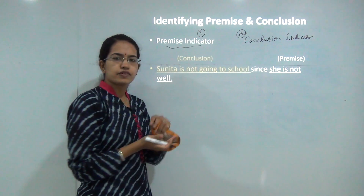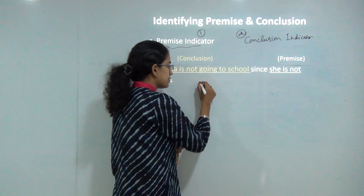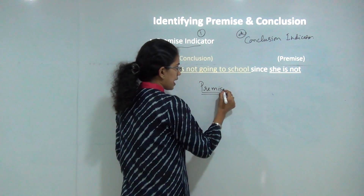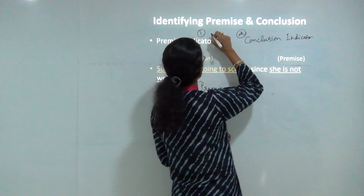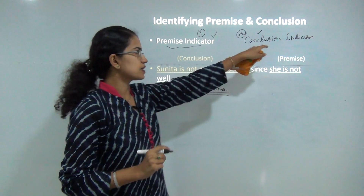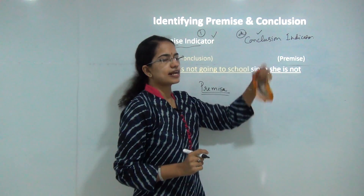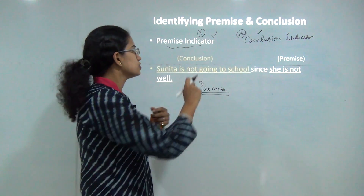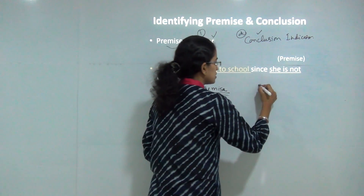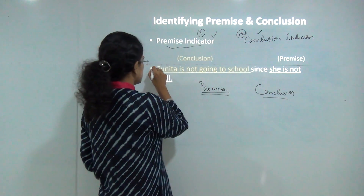I can find a premise either by means of a premise indicator, or by means of a conclusion indicator — because by identifying the conclusion, what is not the conclusion becomes the premise. So with either means I can find out both premise and conclusion. Now the interesting thing here is let's read this statement: 'Sunita is not going to school since she is not well.'